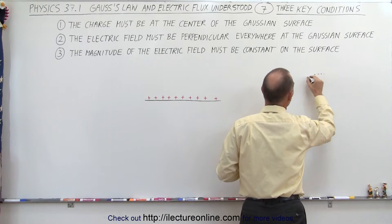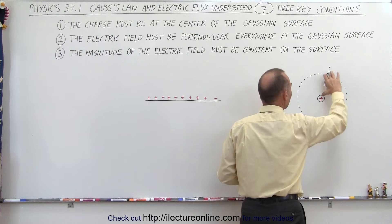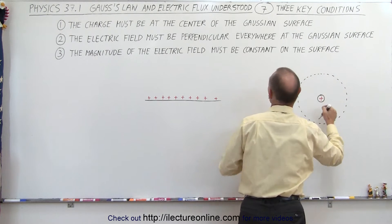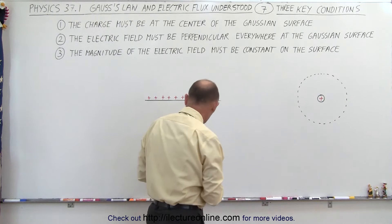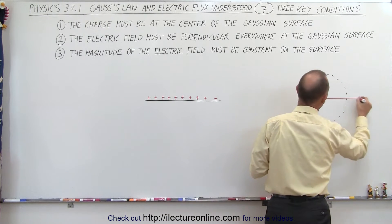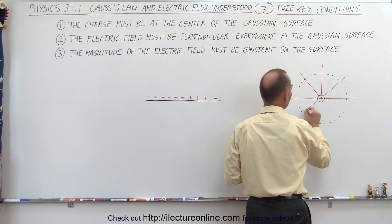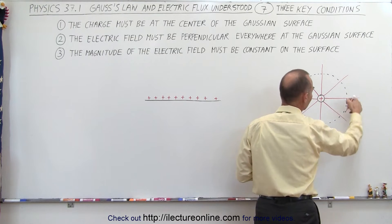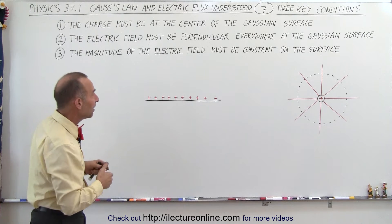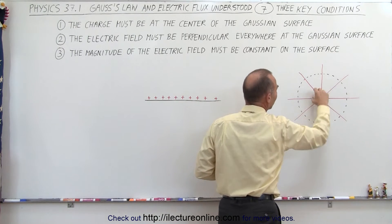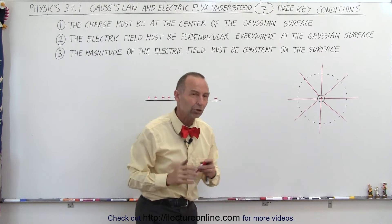But a spherical shape does indeed work. We make sure that the point charge is exactly at the center of the sphere, so the radius is the same anywhere from the charge to the surface of the sphere. Condition one is met — we place the charge right at the center of the Gaussian surface. We can also see that if we draw the electric field lines, they will emanate away from the positive charge, and in each case the electric field line will go through the Gaussian surface perpendicular to the surface, so condition two is met. Finally, since the surface is equidistant from the charge everywhere, the magnitude of the electric field must be constant anywhere along the surface. So that is a good Gaussian surface.